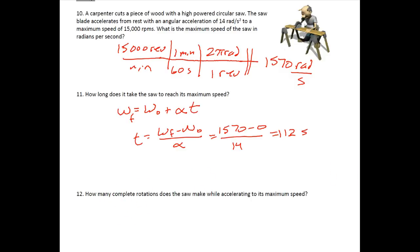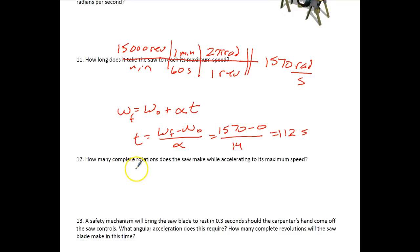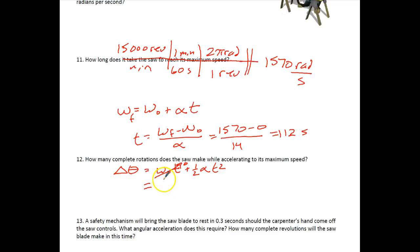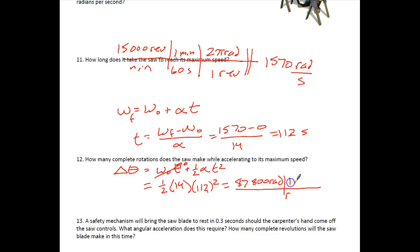How many complete rotations does the saw make while accelerating to maximum speed? Using delta-theta = ω₀t + ½αt²: since it starts from rest, the first term is zero. So delta-theta = ½ × 14 × 112² = 87,800 radians. Converting to revolutions: 87,800 / 2π ≈ 14,000 revolutions.